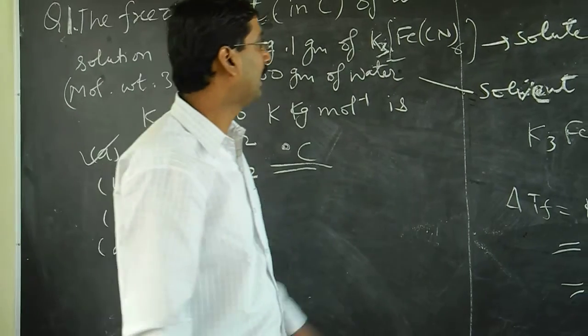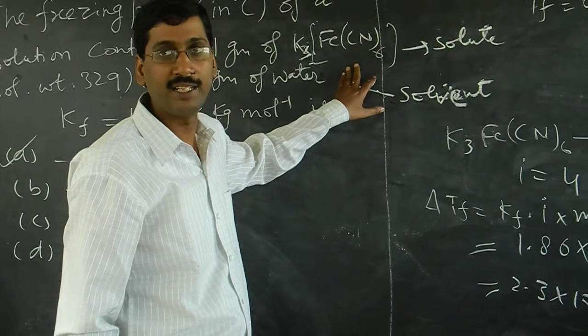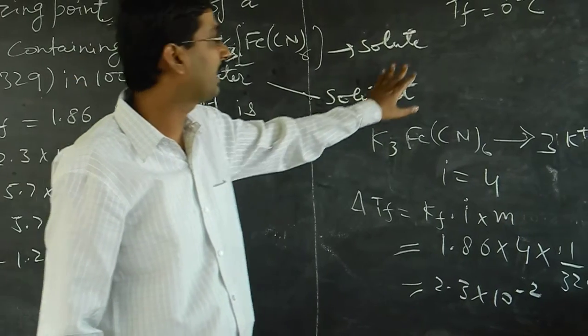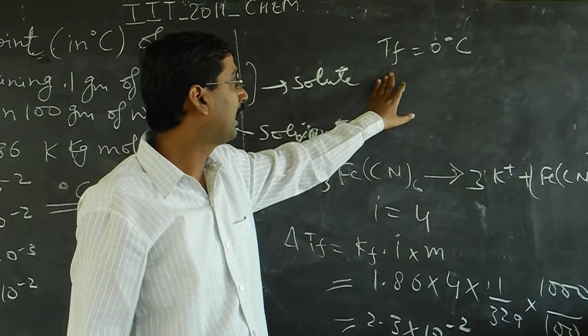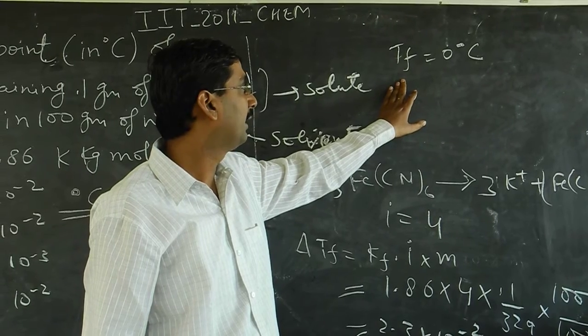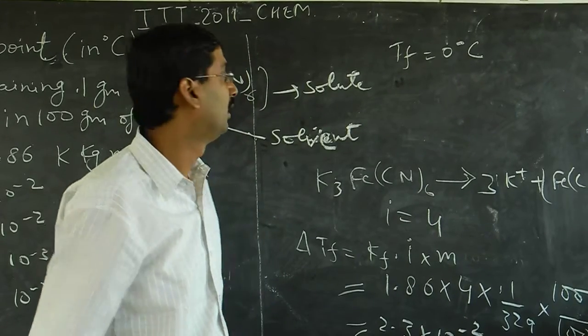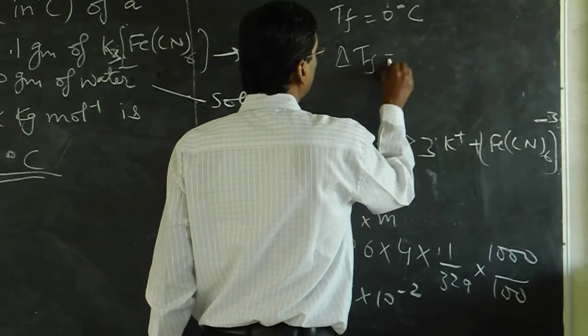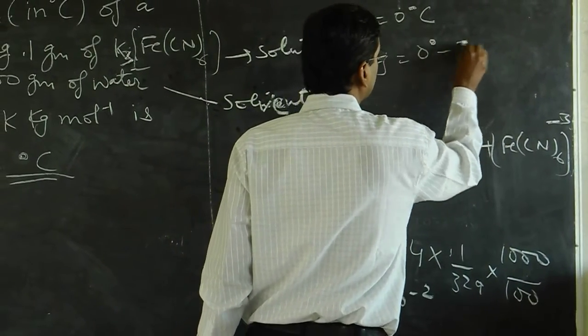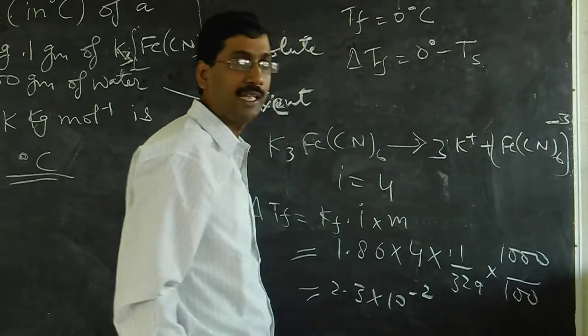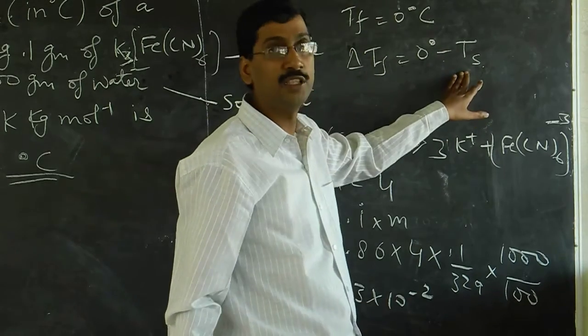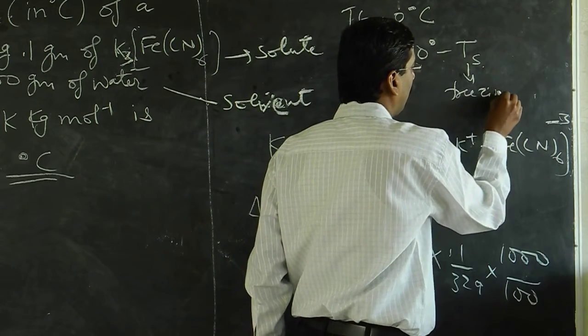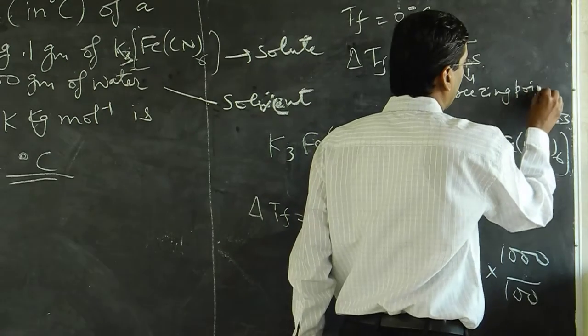Here the potassium ferrocyanide is the solute and the water is the solvent. The freezing point of water is zero degrees Celsius, and delta Tf is equal to zero degrees Celsius minus Tf of solution. Tf is the freezing point of the solution.